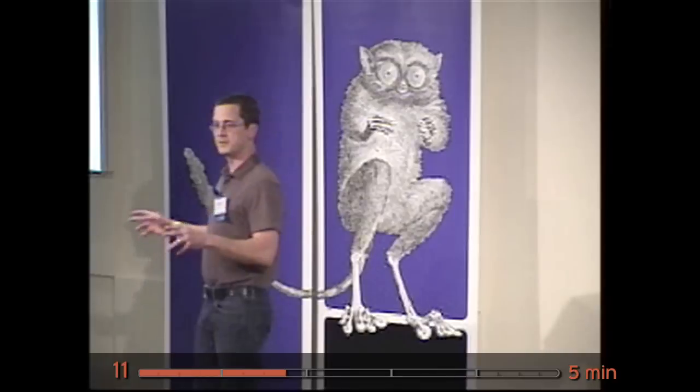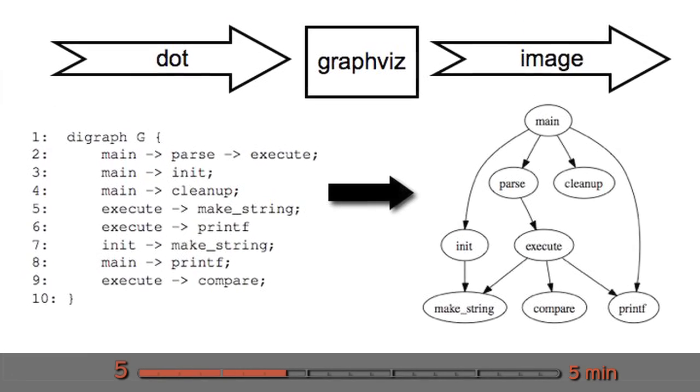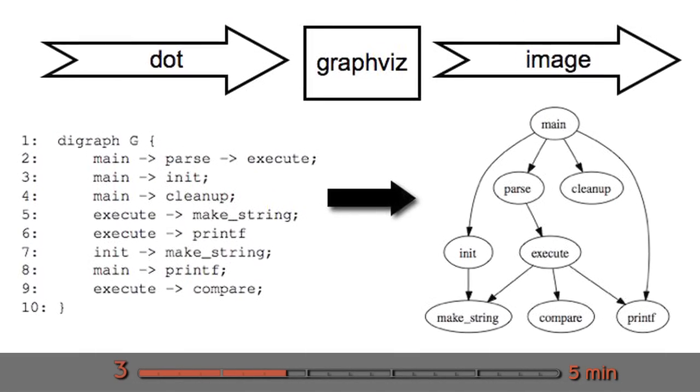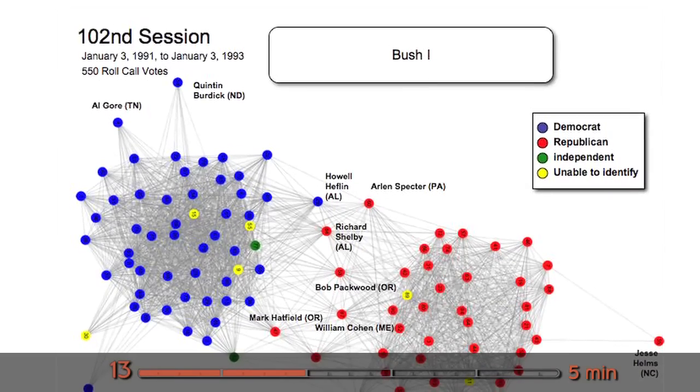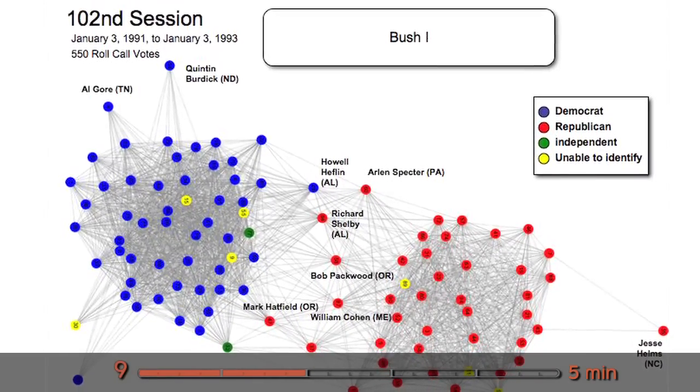So then you can take all that stuff once you've got it munched together and stuff it into a program called DOT. And what DOT will do, or GraphViz, is turn that stuff into a picture. That picture will look something like this. This is the social graph or the representation of the voting patterns for the 1991 U.S. Senate session.